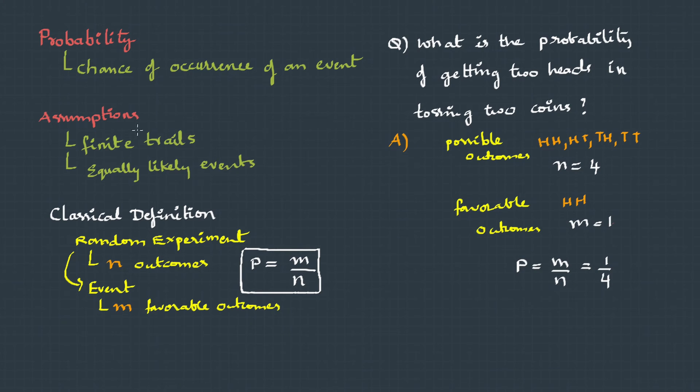Now because of the initial assumptions, this classical definition cannot be applied to many events, because events are not always finite and they may not be equally likely also. Therefore, to address these issues, scientists have extended the classical definition, and we call this extension the axiomatic approach.